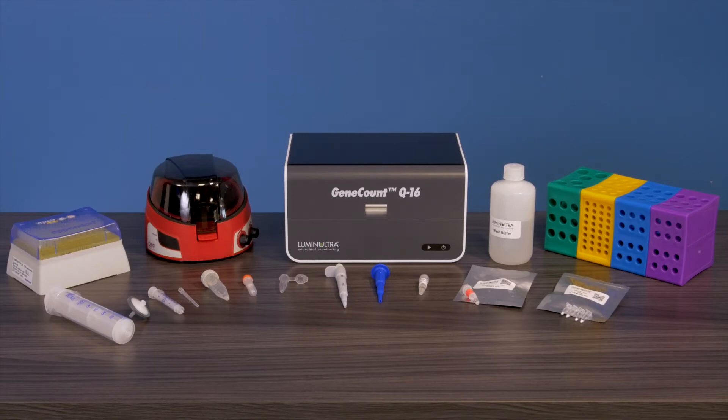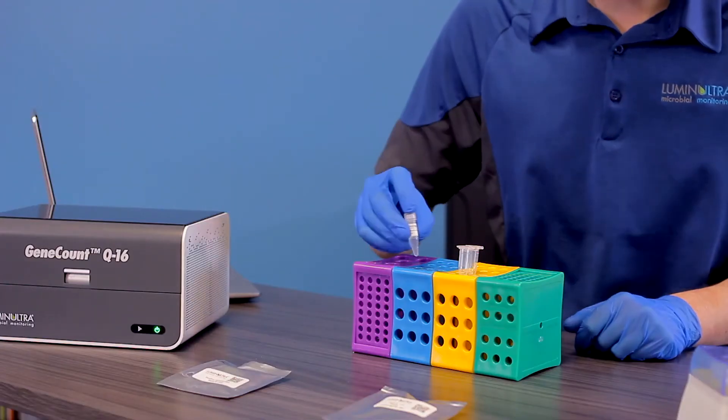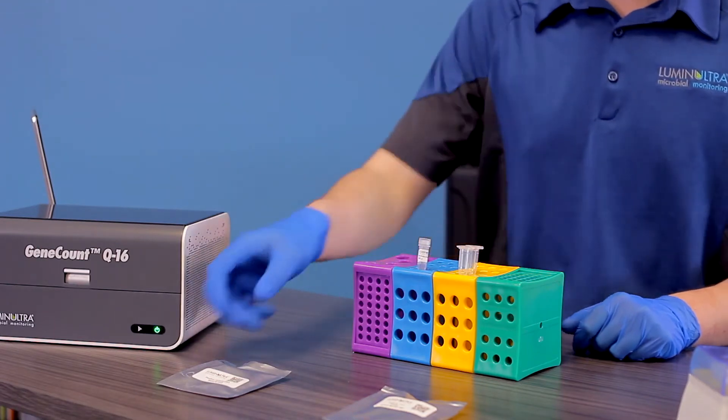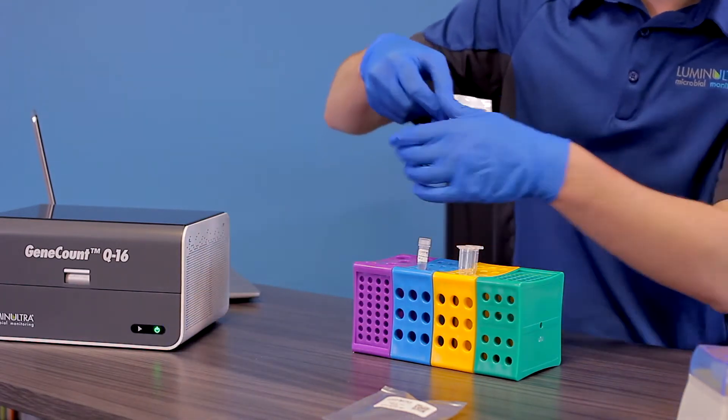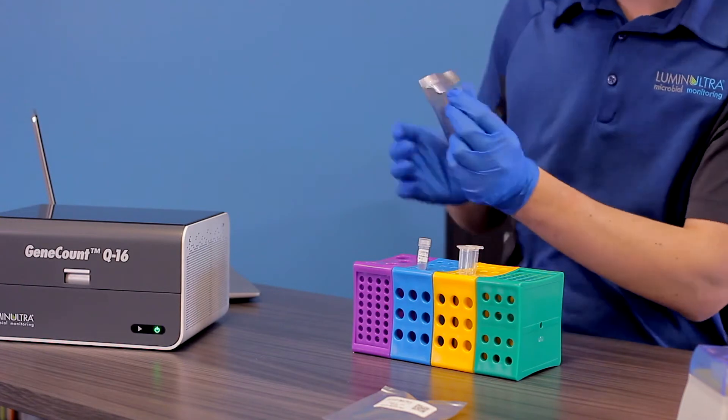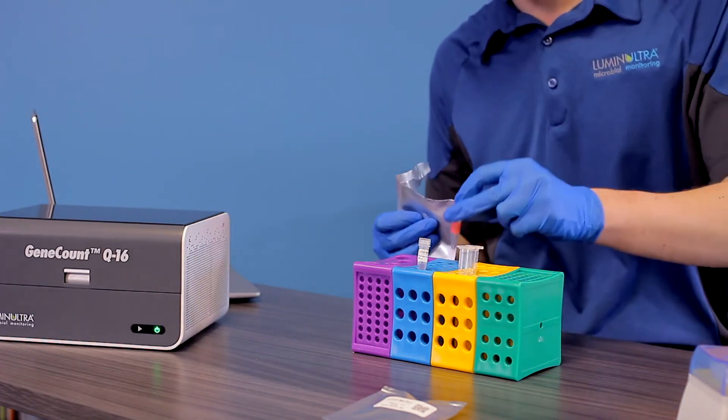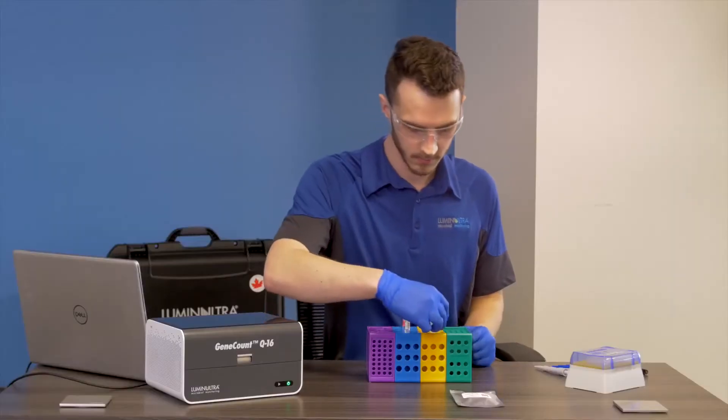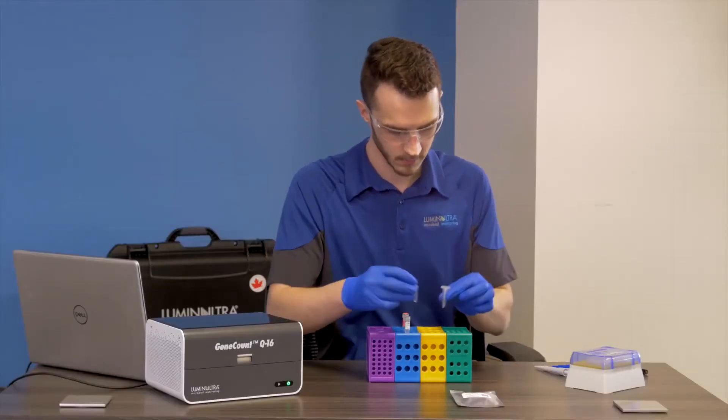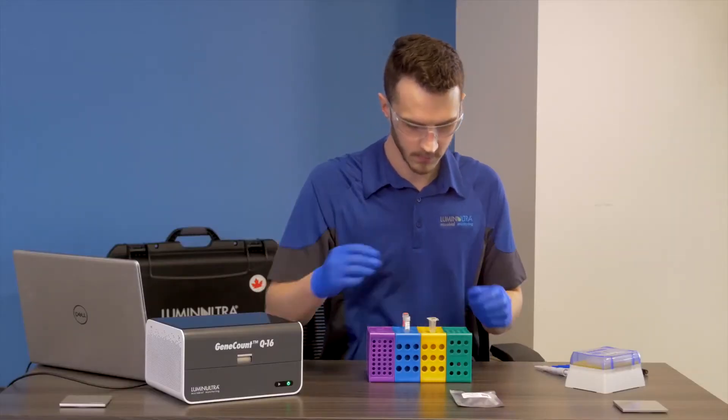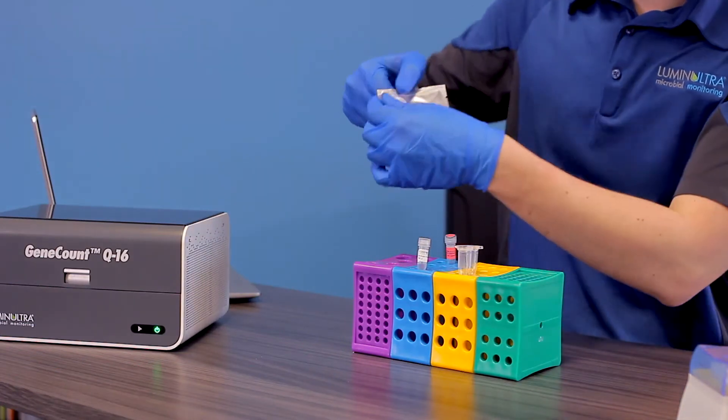Arrange the following in the appropriately sized sections of your tube racks: nuclease-free water, positive controlled DNA, DNA samples purified using the GeneCount LT-DNA purification kit, and lyophilized qPCR reagents.